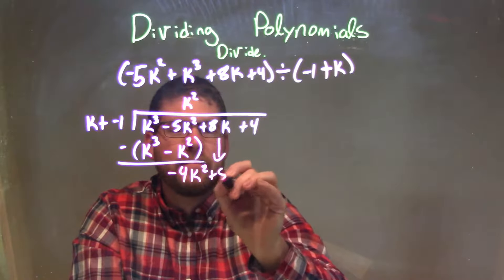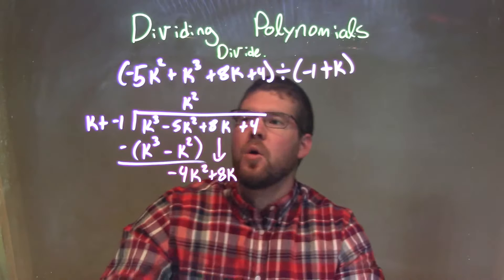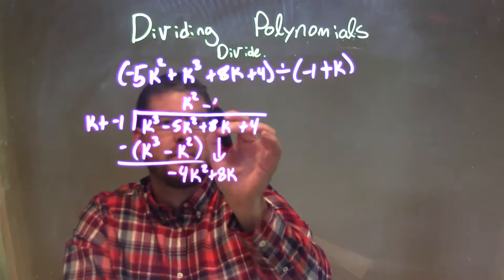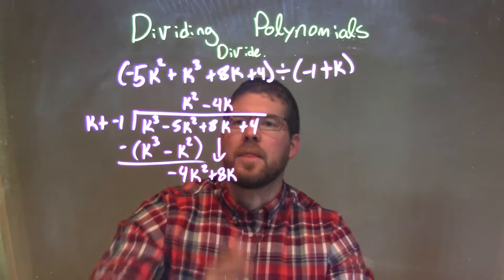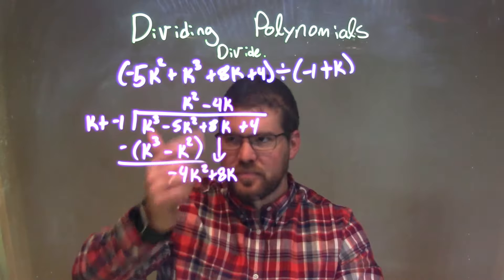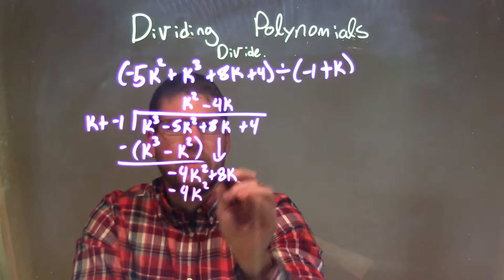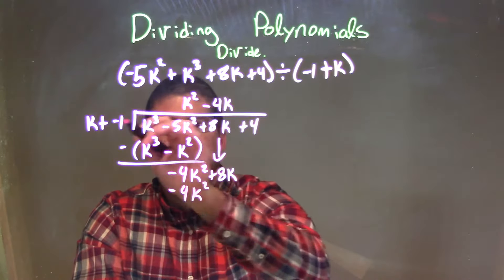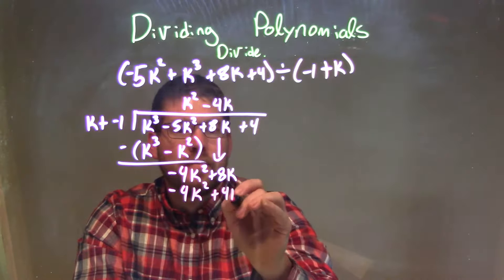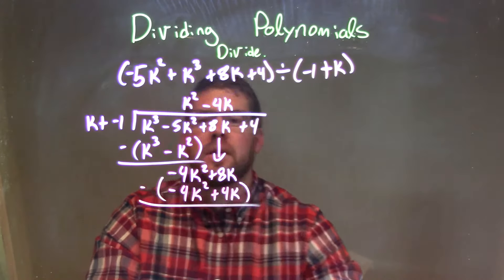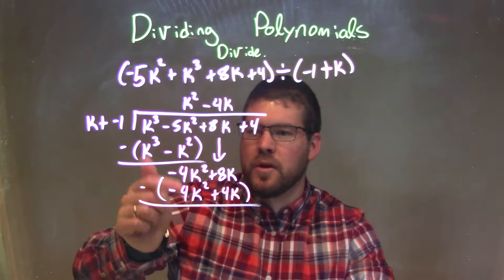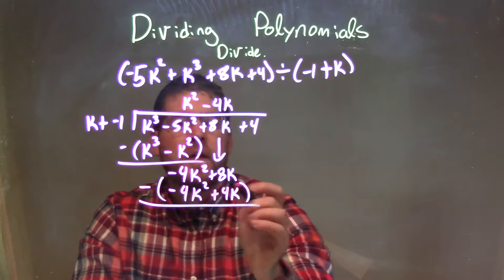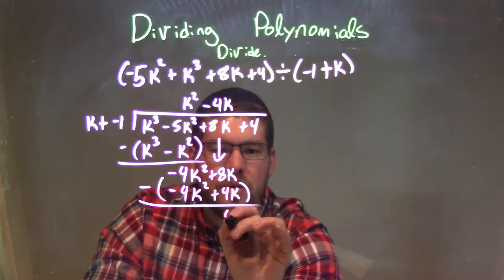Let's bring down the 8k and do it again. What times k gives me minus 4k squared? That's minus 4k. Minus 4k times k is minus 4k squared, and minus 4k times a negative 1 is a positive 4k. When I subtract the two, it eliminates the minus 4k squared — that's a zero — and then 8k minus 4k is just a positive 4k.